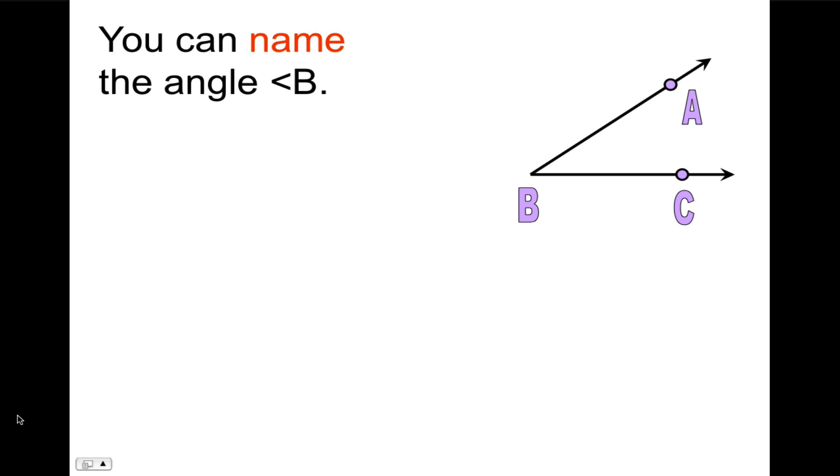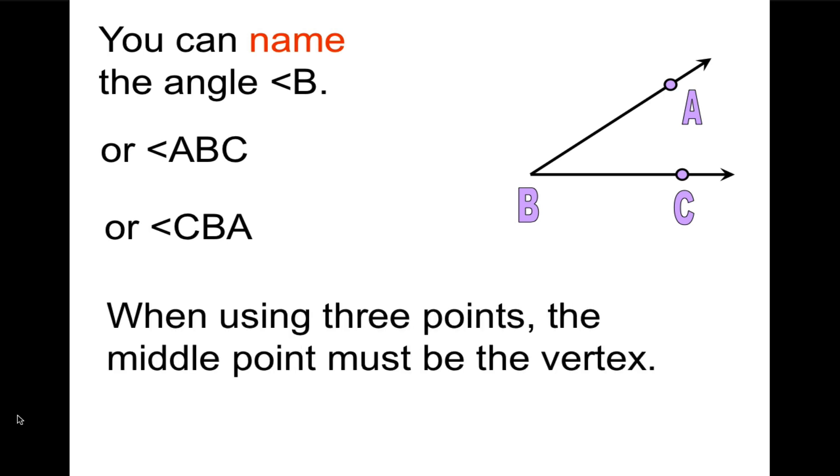You can name the angle, angle B. Or you can name it using three letters. First we can call it ABC or CBA. But when using three points, the middle point of the name must be the vertex. So that you could actually trace your finger along the ray as you name it. From A to B to C. Or from C to B to A. So ABC or CBA. Those are two good names for that angle.